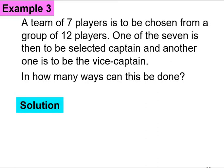Next let's look at example 3. A team of 7 players is to be chosen from a group of 12 players. One of the seven is then to be selected captain and another one is to be vice captain. In how many ways can this be done? We have 12 players, we're going to choose 7 players, and from the 7 players we're going to choose a captain, and from the remaining 6 after we subtract the captain we're going to choose the vice captain. Multiplying everything we get 33,264.